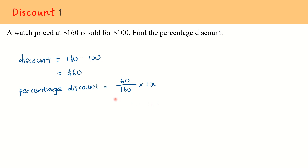Then we calculate the percentage discount by taking the discount value $60 over the marked price which is $160, times 100%, which gives us 37.5%. Do take note that when calculating percentage discount, it should always be the discount value — $60 in this case — out of the marked price, since marked price refers to the original price, which in this case would be $160.